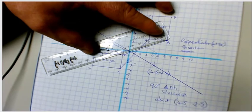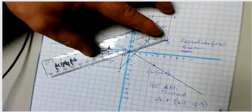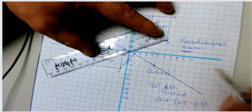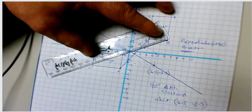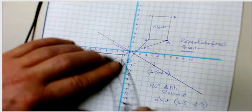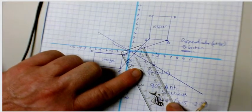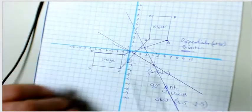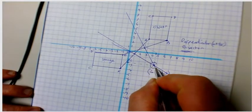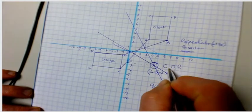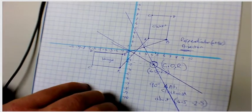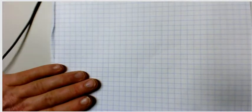Do the same on the next line between B and B dash. Again five and a half centimeters, so halfway is two and three quarter centimeters. Draw the perpendicular bisector on that line too. Where those two bisector lines cross gives you the center of rotation.